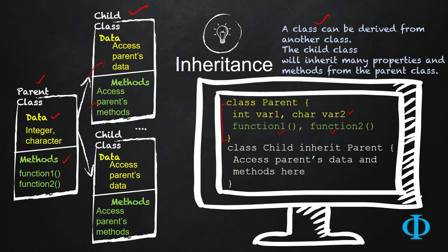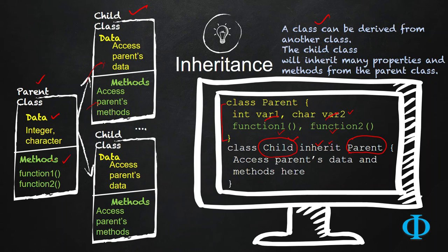It is possible to write another child class which inherits the parent. In order to inherit, a programming language can use different keywords or operators to tell the compiler that this child is actually inheriting this parent. Whenever the child inherits the parent, it can access var1, var2, function1, and function2 — that is, all the variables, all the data, and all the methods of the parent class. And that is called inheritance.